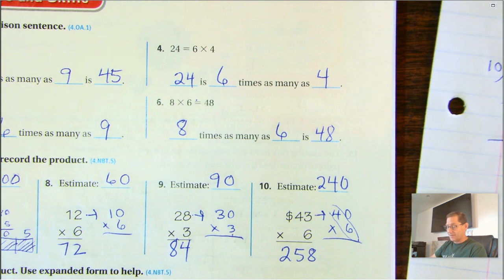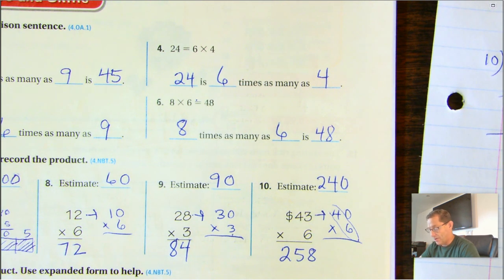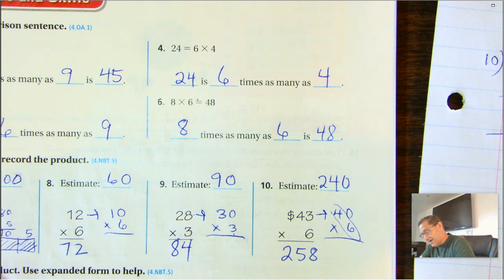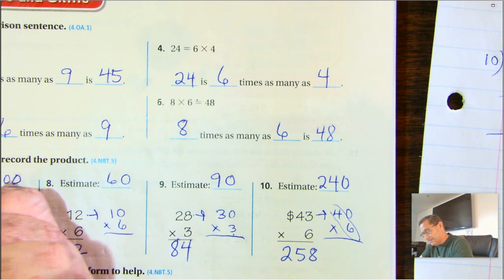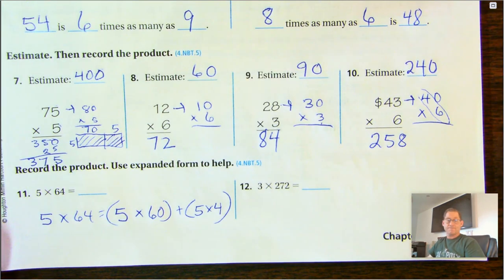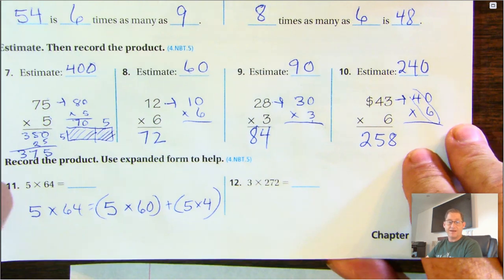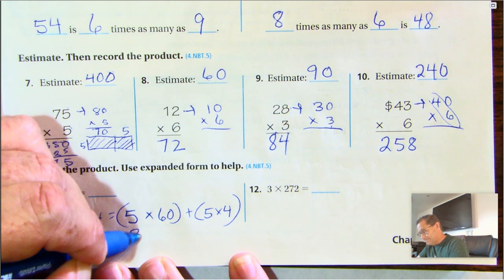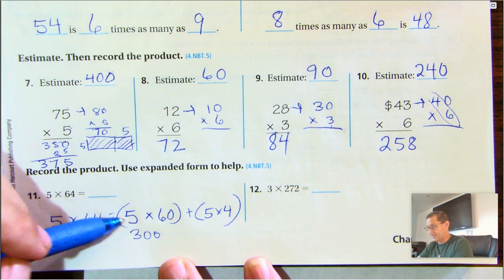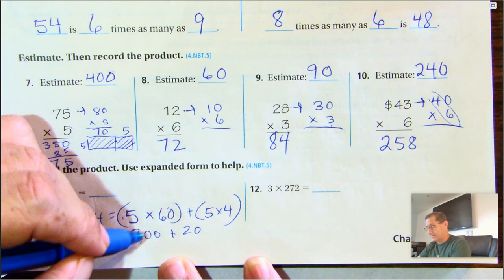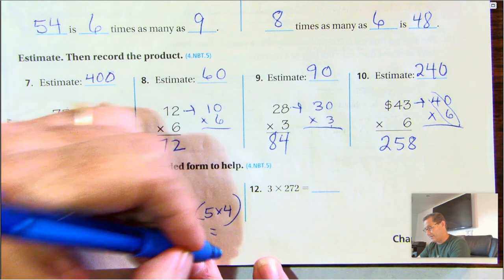And all of our answers are reasonable because they're real close to our estimates. All right. So number 11, record the product and use the expanded form to help. So 5 times 64 is the same as 5 times 60 plus 5 times 4. So 5 times 60 is 300. 6 times 5 is 30. Put the one zero from the 10. Plus 5 times 4, which is 20. If we combine 300 plus 20, we get 320.